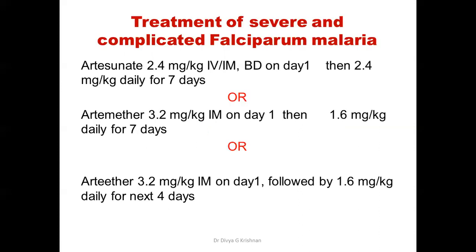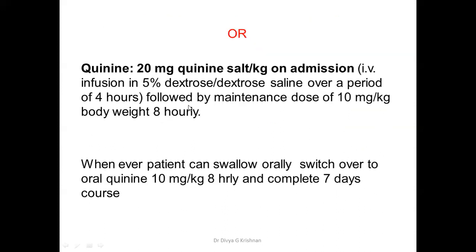For treatment of severe and complicated falciparum malaria, different artemisinin therapies can be used — artesunate, artemether, or arteether — with dosages given for approximately seven days. Alternatively, quinine can also be used. For severe complicated malaria, remember to use quinine or artemisinin-based therapy.